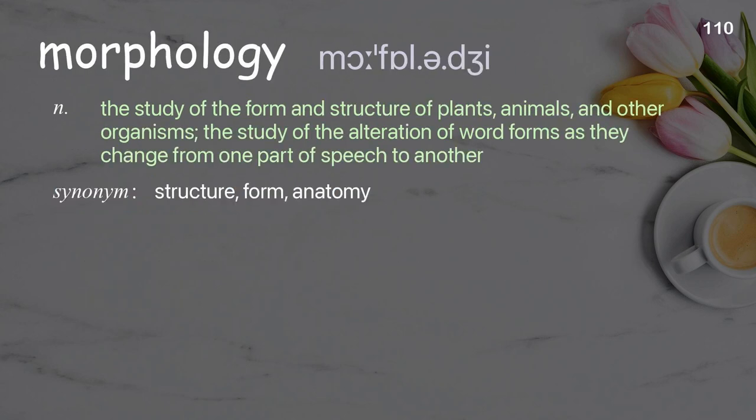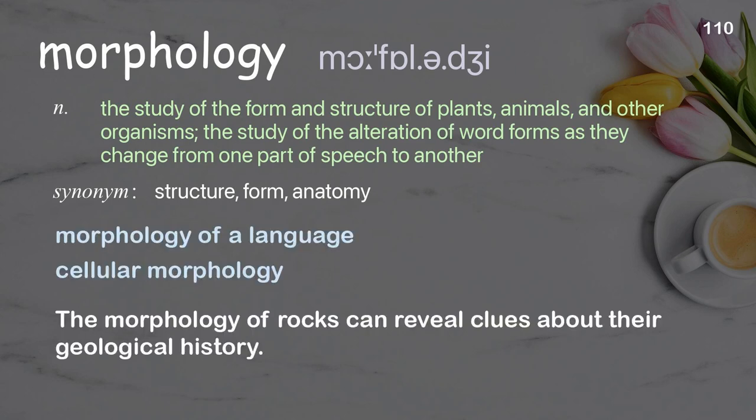Morphology: the study of the form and structure of plants, animals, and other organisms; the study of the alteration of word forms as they change from one part of speech to another. Examples: morphology of a language; cellular morphology. The morphology of rocks can reveal clues about their geological history.